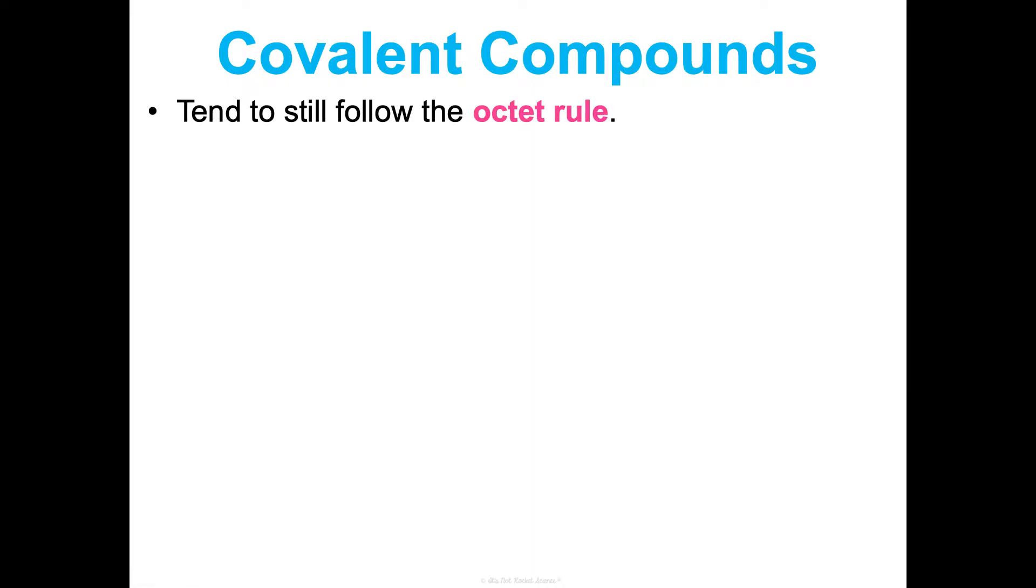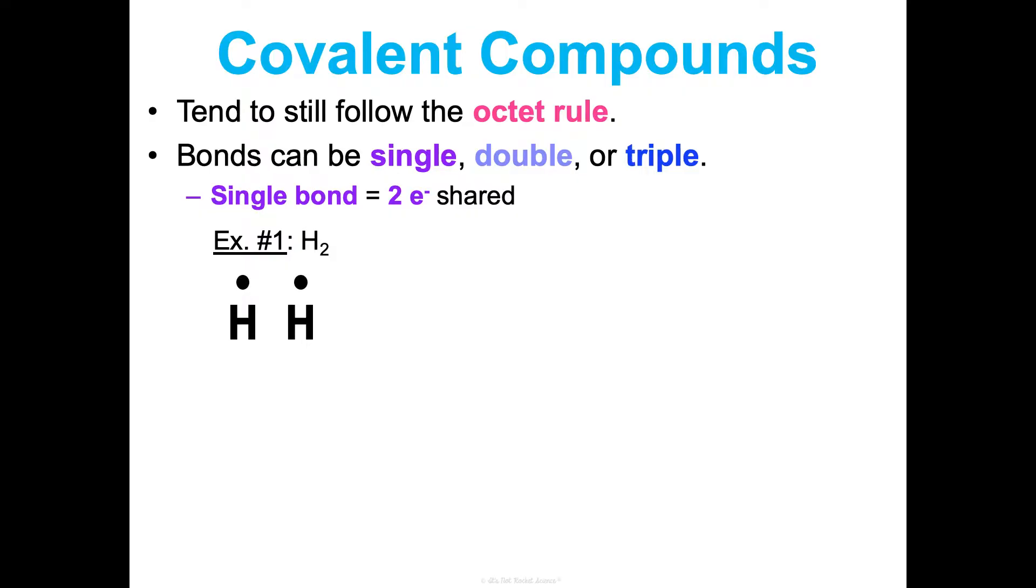Now, in terms of stability, covalent compounds tend to still follow the octet rule of desiring 8 to get those full outer energy levels of electrons. And when they share electrons and they form bonds, they can make a single bond, a double bond, or a triple bond. So in a single bond, they're going to share two electrons. An example would be what we see in hydrogen, H2. So there's two hydrogen atoms. They're going to share that. And so it would form this bond. That one dash represents two electrons shared.